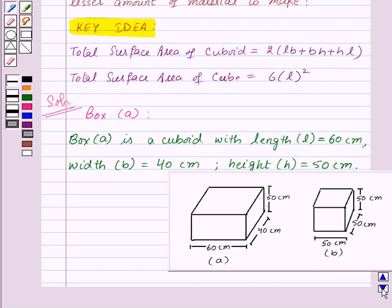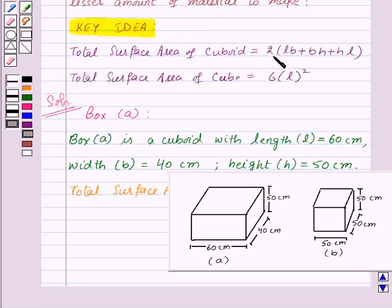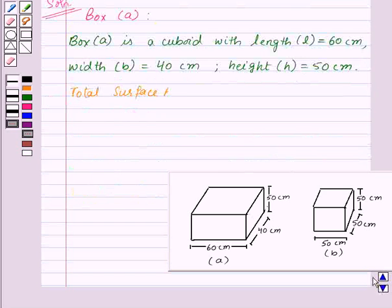So let's find out its total surface area, which is equal to 2(lb + bh + hl). So let's write it here.